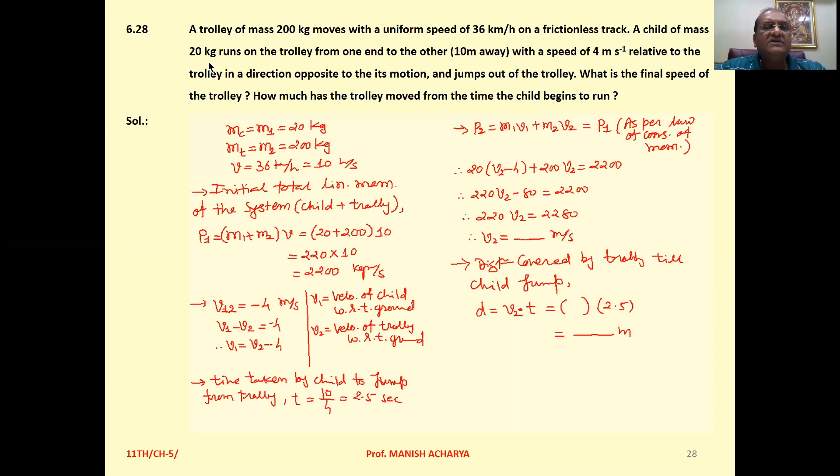A child of mass 20 kg runs on the trolley from one end to the other, 10 m away, with a speed of 4 m per second relative to the trolley in a direction opposite to its motion, and jumps out of the trolley.